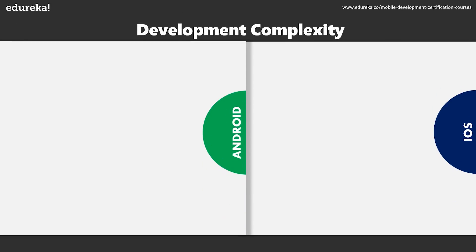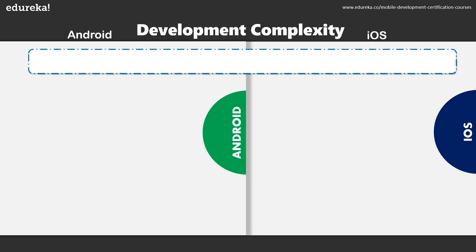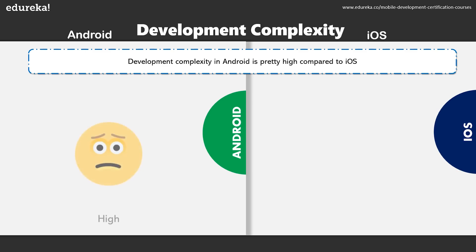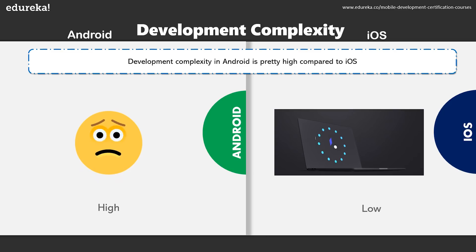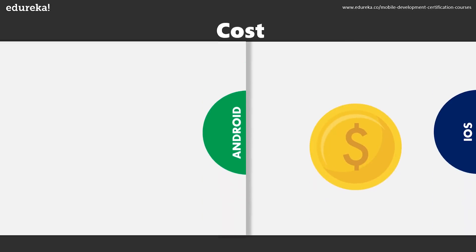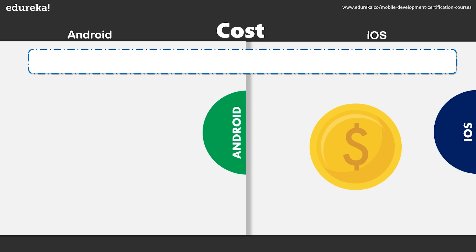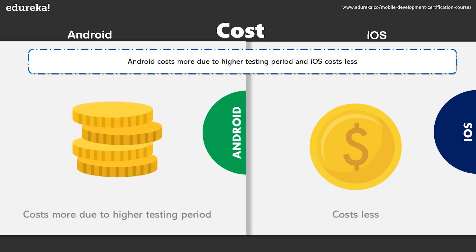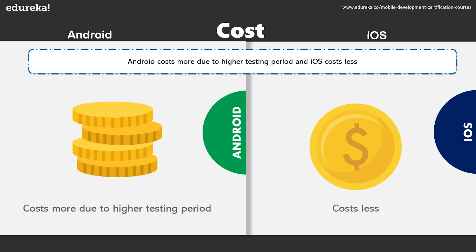Android has a very high development complexity. It normally takes around 30 to 40% more time to develop an application on Android rather than on iOS. So the development complexity in Android is a little high compared to iOS. Talking about cost, Android costs more due to a higher testing period.